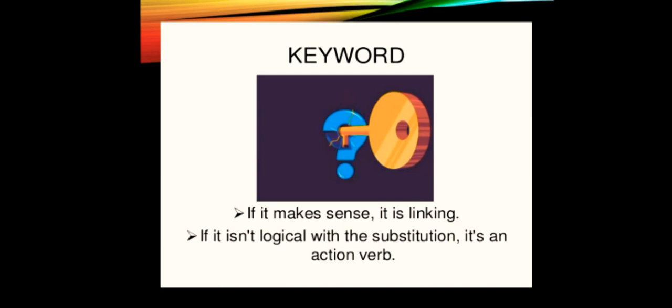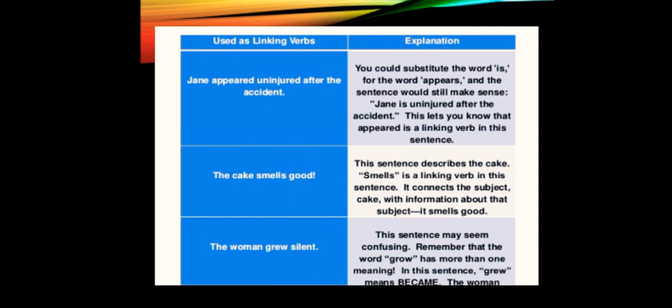So if the sentence still makes sense, then it is probably a linking verb. If the sentence would not make sense with the word 'is,' then it is probably an action verb. This is what you have to remember: if I replaced the verb with 'is' and the sense is complete, it is linking; not complete, it's action. Now look at this chart - using as linking verbs. Jane appeared uninjured after the accident. 'Appeared' is the main verb here. Jane is uninjured after the accident - after replacing 'appeared,' the sentence's sense is complete, so this is working as a linking verb. Similarly: the cake smells good, the cake is good. The woman grew silent, the woman is silent.